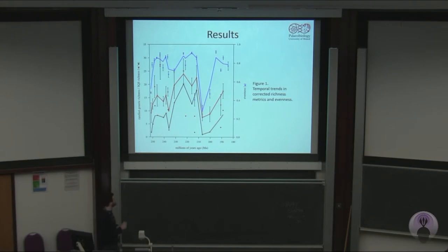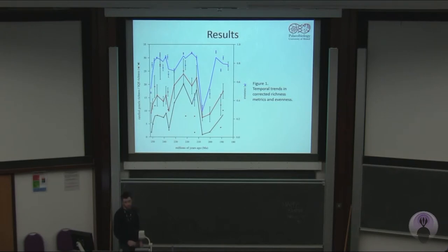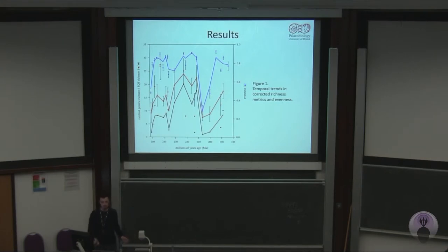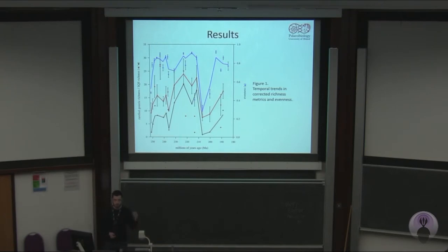We also see a drop around 235 million years ago in the Carnian — a drop in evenness that continues, with potentially some sort of recovery going on. Looking at other metrics like relative abundance, there is certainly something happening here. There is a turnover from fairly synapsid-dominated ecosystems to diapsid-dominated ecosystems at this time.